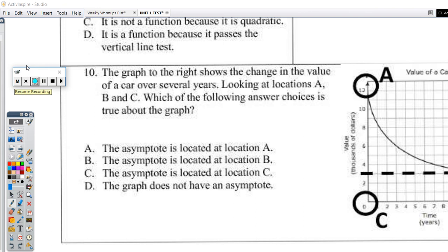Question 10. The graph to the right shows the change in the value of a car over several years. Looking at locations A, we're going to look at location A, location B, which is going to be this guy right here, and then location C. Which of the following answer choices is true? We want to know which one is true. Let's start here. Let's look at answer choice or location A here.